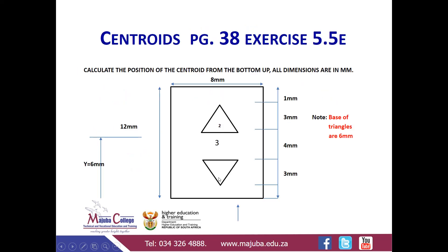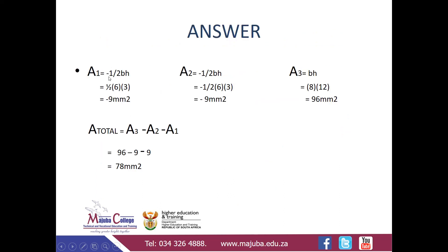For us to see that there is a triangle inside a rectangle, we have to cut this section. Just imagine you have a box and you want to see the triangle on the surface — you have to cut it. Once you cut, that means there is a negative; you remove this portion. That is why there is a negative sign, so area one becomes minus 9 millimeters squared.